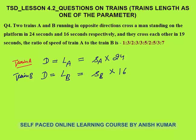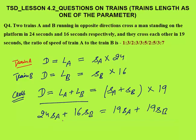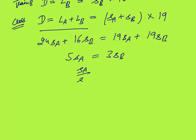Third situation: they cross each other in 19 seconds. When two trains cross in opposite directions, distance = LA + LB = (SA + SB) × 19. Substituting: 24SA + 16SB = 19SA + 19SB, which gives 5SA = 3SB, so SA/SB = 3/5.